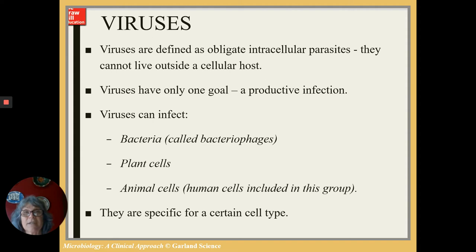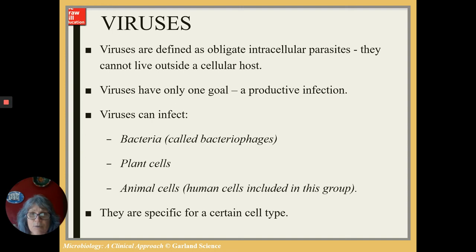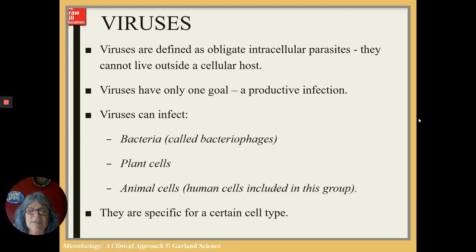They have one goal: a productive infection. For a virus, a productive infection means replicating at the highest rate and passing on new virions to infect new cells. There are viruses that infect bacteria — bacteriophages — viruses that specifically infect plant cells, and animal viruses that specifically infect animal cells, including human cells. Each one is specific for a certain type of cell — specific not only to the organism they infect, but to which cells they can get into.